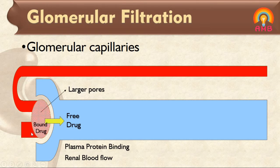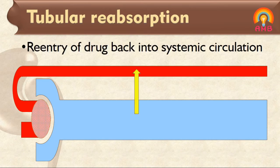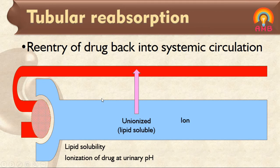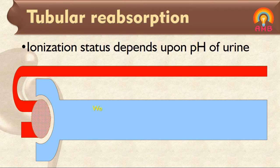The next part is tubular reabsorption, which means re-entry of drug back into the systemic circulation. This depends on lipid solubility and ionization of the drug at the existing urinary pH. Lipid soluble or unionized drugs filtered at the glomeruli diffuse back into the capillaries, but non-lipid soluble and highly ionized drugs are unable to do so. Changes in urinary pH affect tubular reabsorption of drugs that are partially ionized.